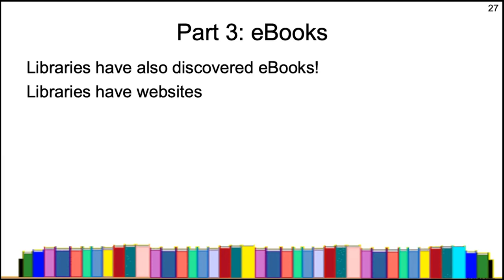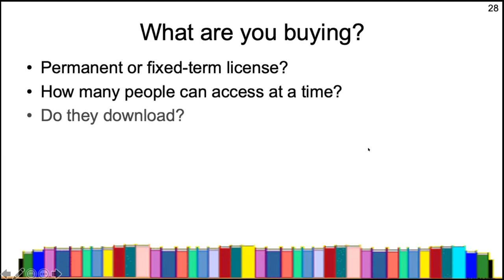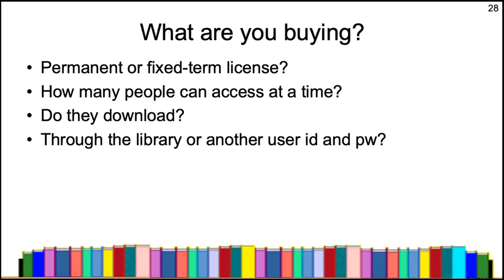Possibly the bad news is that library websites are not always ideal for extensive reading. When getting ebooks, ebooks are not the same as paper books — there are different licenses. Some ebooks you can get for your library permanently, better even than paper books which start to fall to pieces after a few years. Some ebooks are on a fixed-term license — one year or two years.